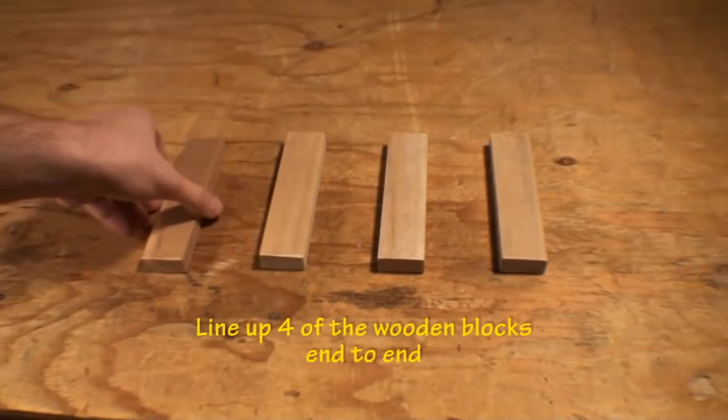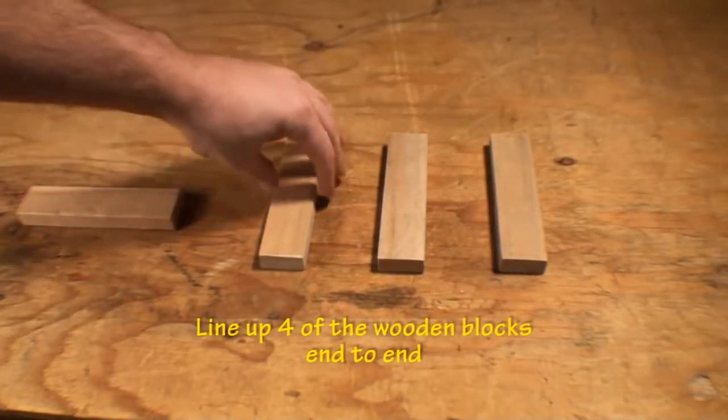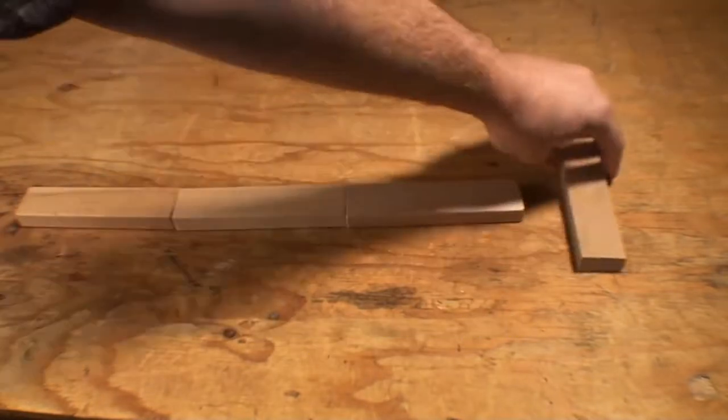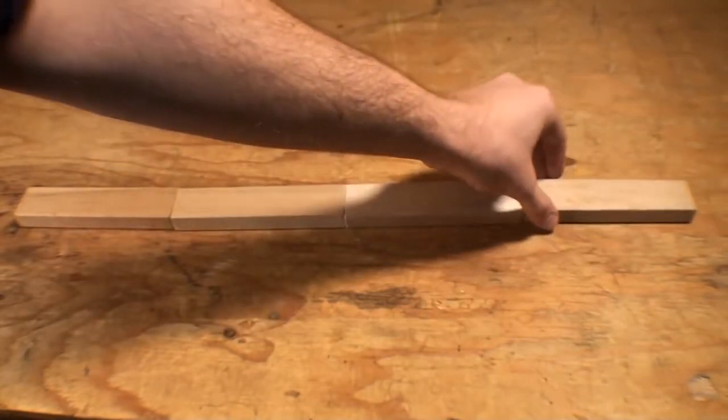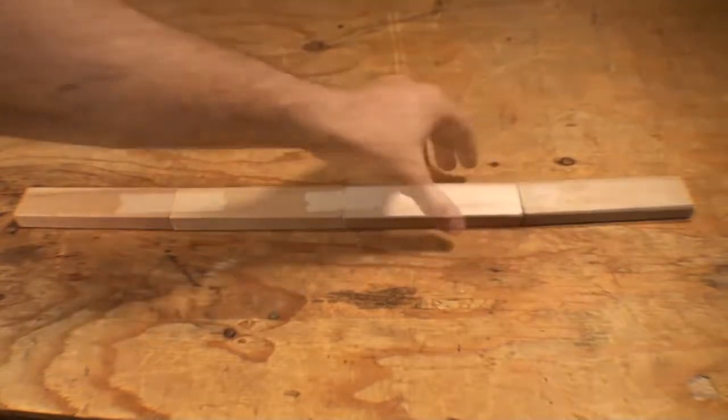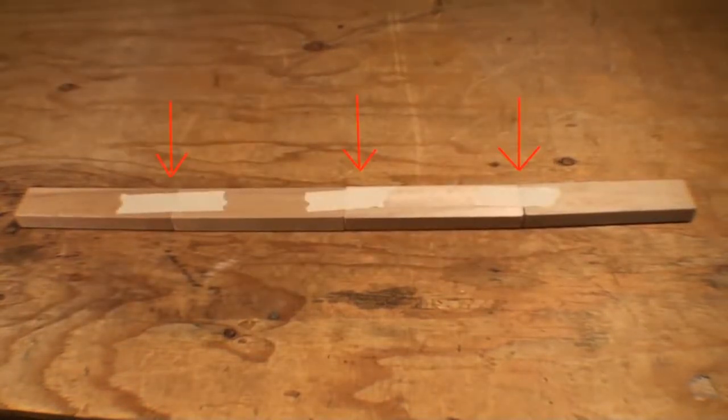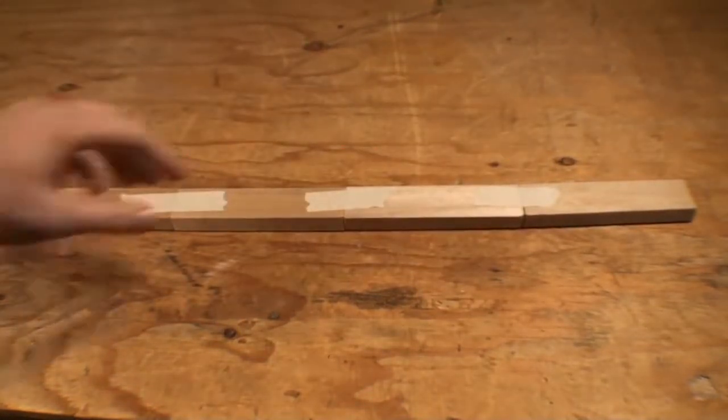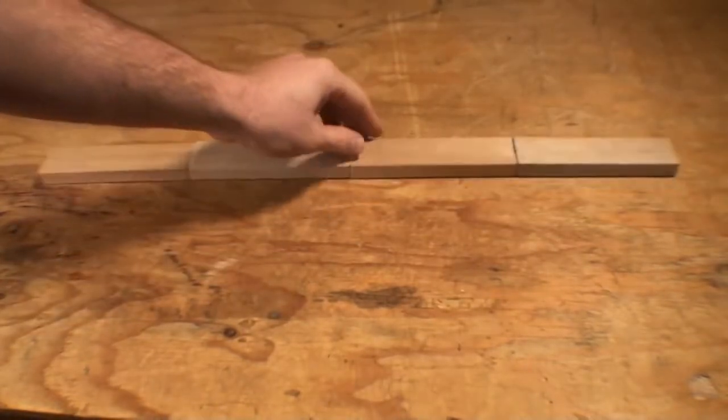First, line up four of the wood blocks end to end. Place tape on the breaks between the blocks and turn the combined piece over.